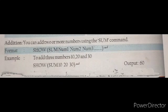Now let us discuss the addition command. You can add two or more numbers using the SUM command. The format is: SHOW SUM NUMBER1 NUMBER2 NUMBER3, then press the Enter key. For example, to add 10, 20 and 30, you write SHOW (SUM 10 20 30) and press Enter to get the result.